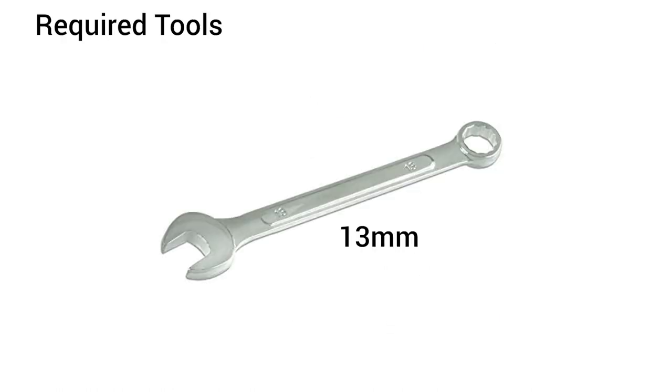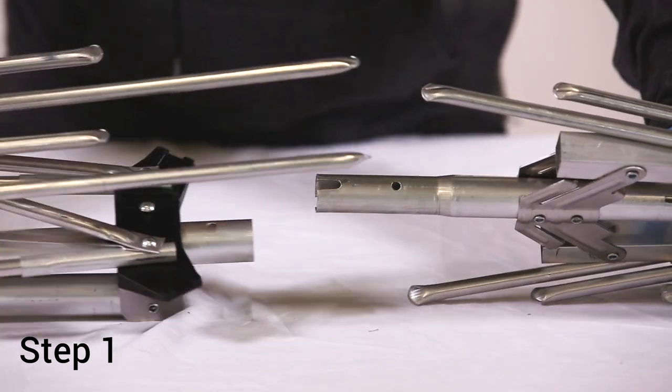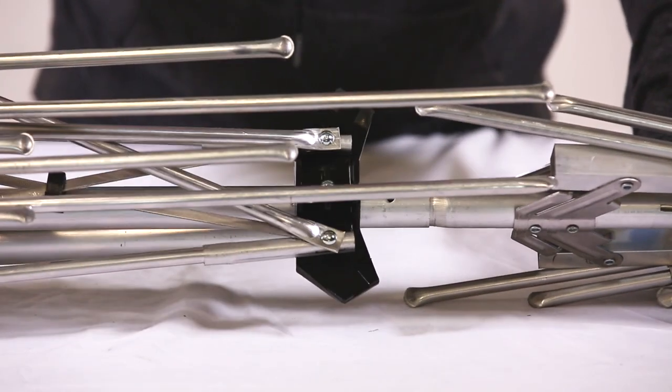You'll need a 13 millimeter wrench. Step 1: Connect the front, middle, and rear sections of the antenna using the included screws and wing nuts as shown.